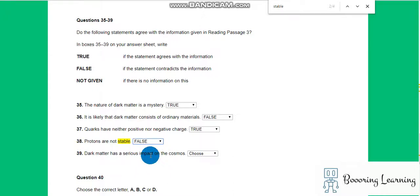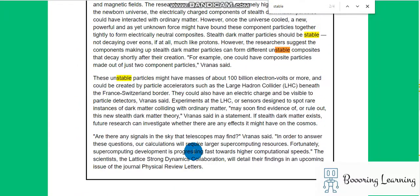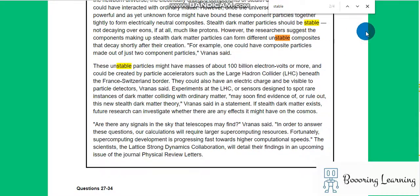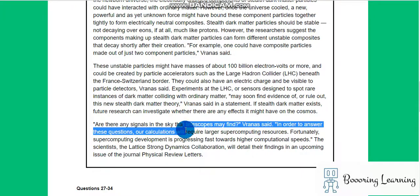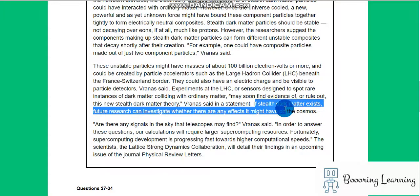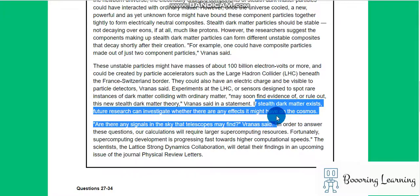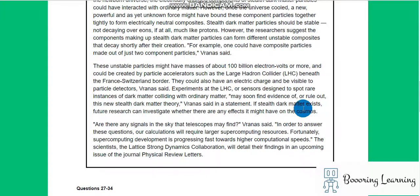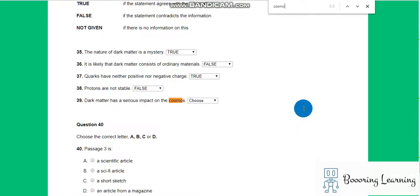Question 39: Dark matter has a serious impact on the cosmos. To answer that question we have to read all of the text I guess. If stealth dark matter exists, which resource can investigate whether there are any effects it might have on the cosmos. So cosmos must be our keyword but it can be paraphrased.